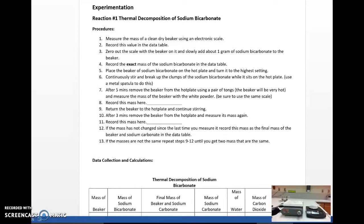Our first step is to measure the mass of a clean, dry beaker using an electronic scale. First, make sure that your scale is in grams. You don't want to make sure that it's not in ounces or something like that. Then I'm going to go ahead and put it on the scale. Obviously, record that mass in the data table as it says in number two.